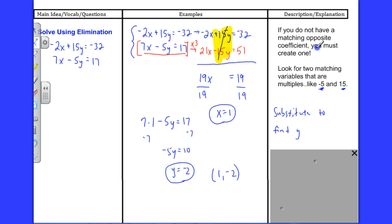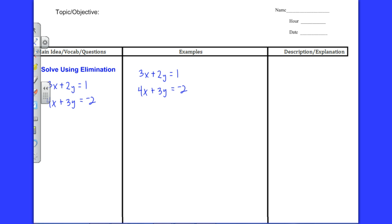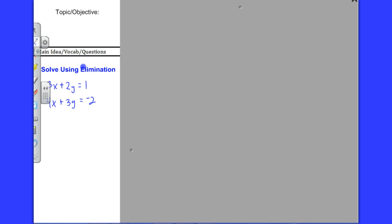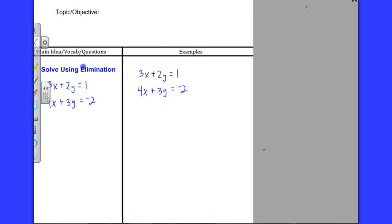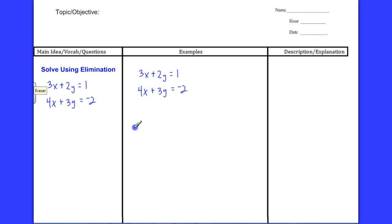So there you have it. If you don't have an opposite coefficient, you're going to have to create one. Well, then let's talk about what happens if we have two equations and neither of the equations have a matching coefficient. What we're going to have to do now is multiply both to create opposites.